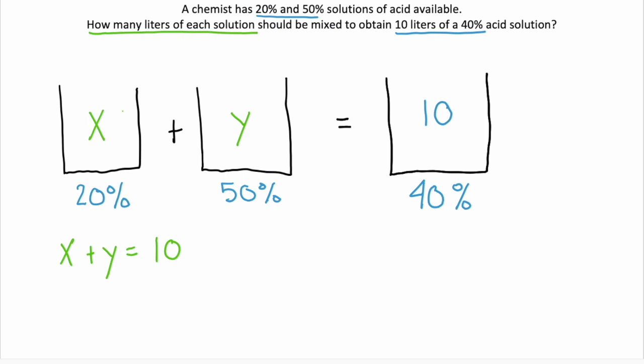Now, when you're mixing, you're taking 20% of x. And remember, of means multiply. So your second equation is going to be 20% of x, and you're mixing it, so you're adding it to 50% of y. And it equals 40% of 10 liters.